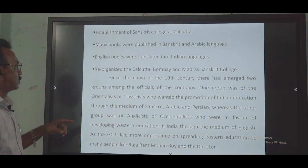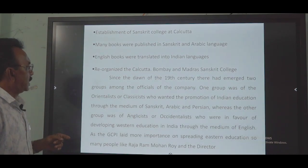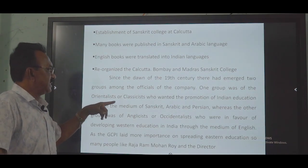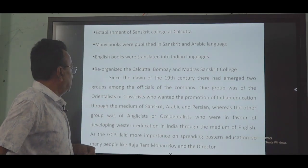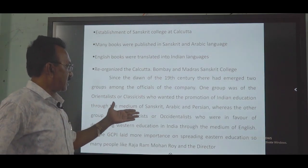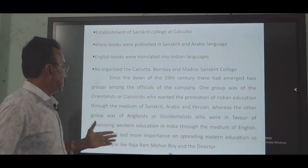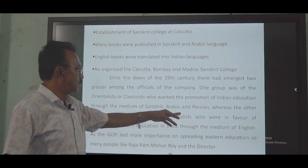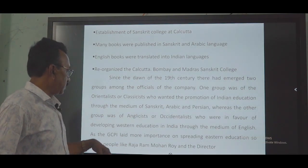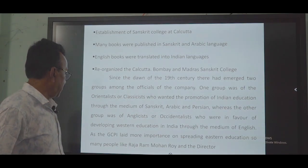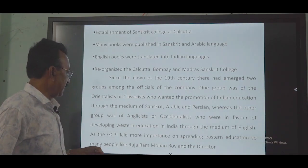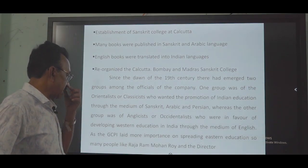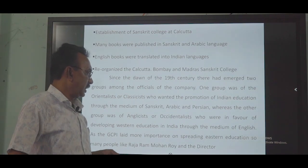Since the dawn of the 19th century, two groups had emerged among the officials of the company. One group was the orientalists or classicists, who wanted to promote Indian education through indigenous languages. The General Committee of Public Instruction laid more importance on spreading eastern education, supported by people like Raja Ram Mohan Roy and the Directors.